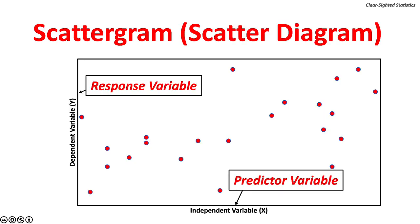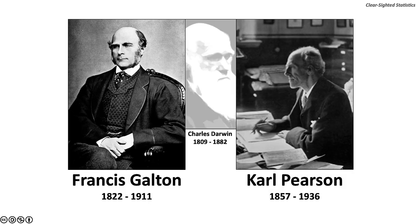A scattergram, or scatter diagram, is an XY chart. Each dot shows the value of the paired independent variable and dependent variable. The independent, or X, variable is charted on the horizontal axis, and the dependent variable, or Y, is charted on the vertical axis.